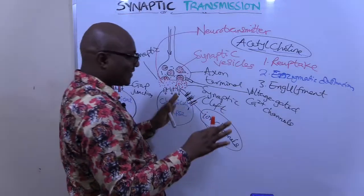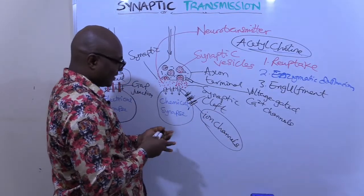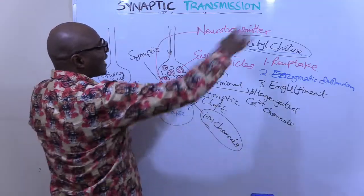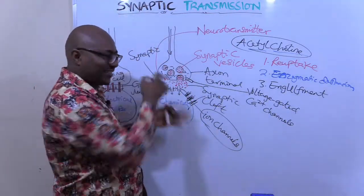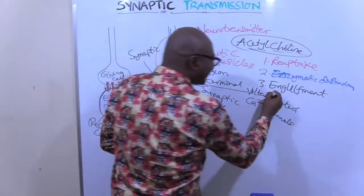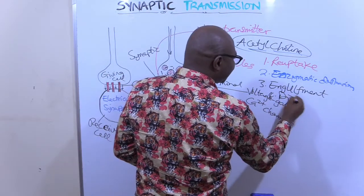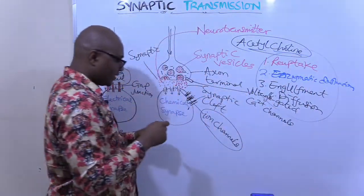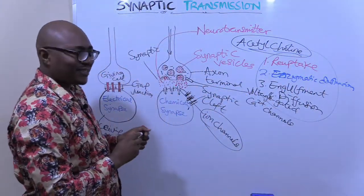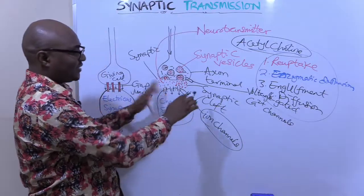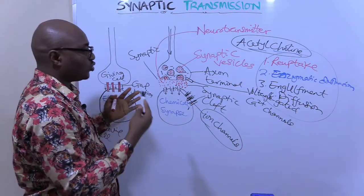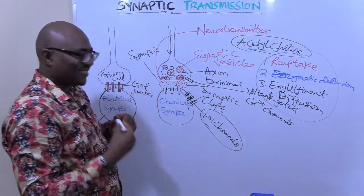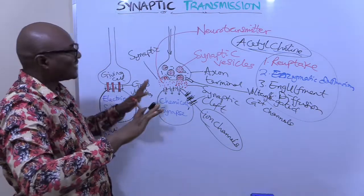The fourth method is diffusion — sometimes the neurotransmitter will just diffuse and get lost in the surroundings. So these are the four major ways in which a neurotransmitter is cleared from the synaptic cleft, so that it doesn't continue to excite or activate the receiving cell.